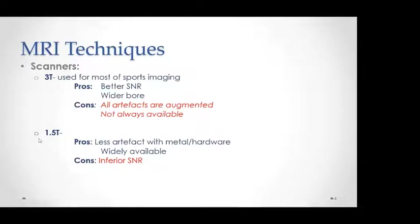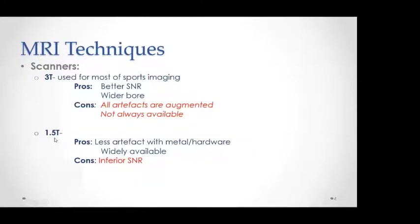For MRI scanners, we generally have the 1.5 and 3 Tesla scanners at our center. It would be a good idea to have two scanners of different field strength at your facility. The 1.5 Tesla scanner is your basic MRI scanner that should be in all centers. The advantages of a 3 Tesla scanner include better signal-to-noise ratio and a wider bore, allowing you to fit a bigger patient.